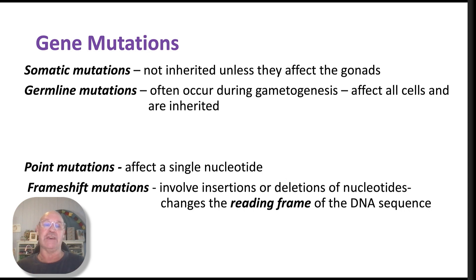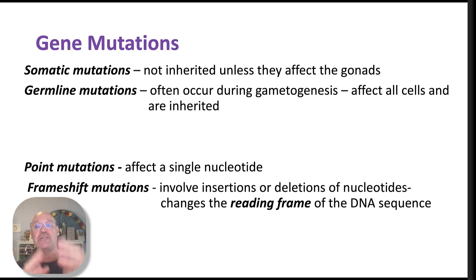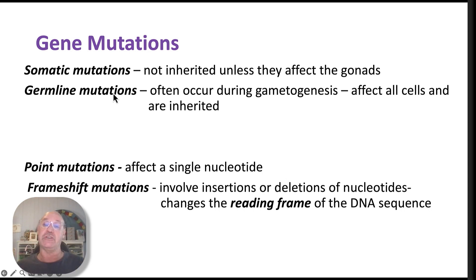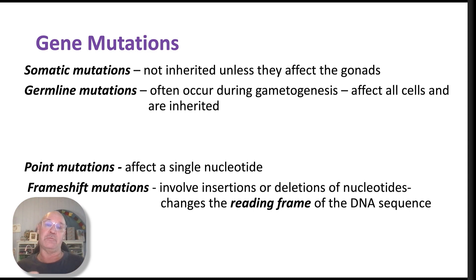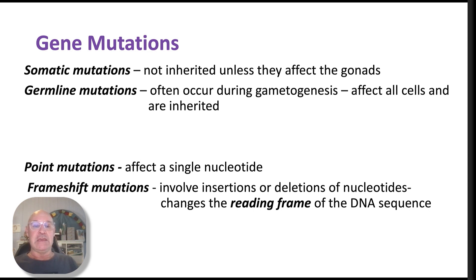In terms of gene mutations, we have somatic mutations, or body cell mutations — these affect body cells so they're not passed on to offspring. But germline mutations occur during gametogenesis, so they exist in the sperm or the egg and can then be passed on to the offspring.